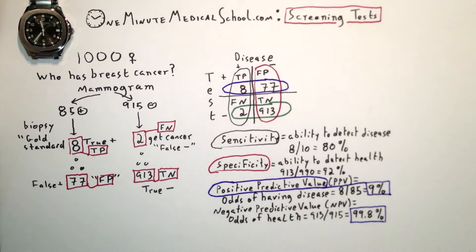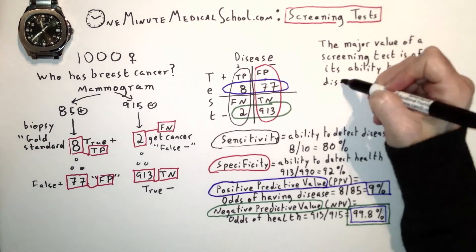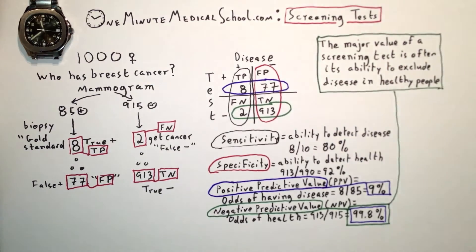8 out of 85 is 9 percent. That's terrible. What's going on? Well, the major value of a screening test is often its ability to exclude disease in healthy people.